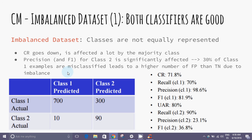In this first case of imbalanced data sets, both classifiers are good. The imbalance represents that the classes are not equally represented. In this case, precision and F1 score for class 2 are significantly affected. In this case, 30% of class 1 examples are misclassified, leading to a higher number of false positives than true negatives due to imbalance.